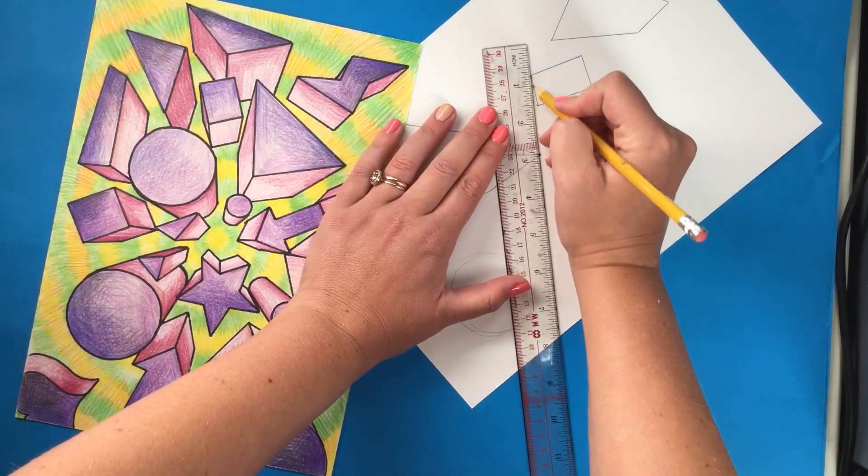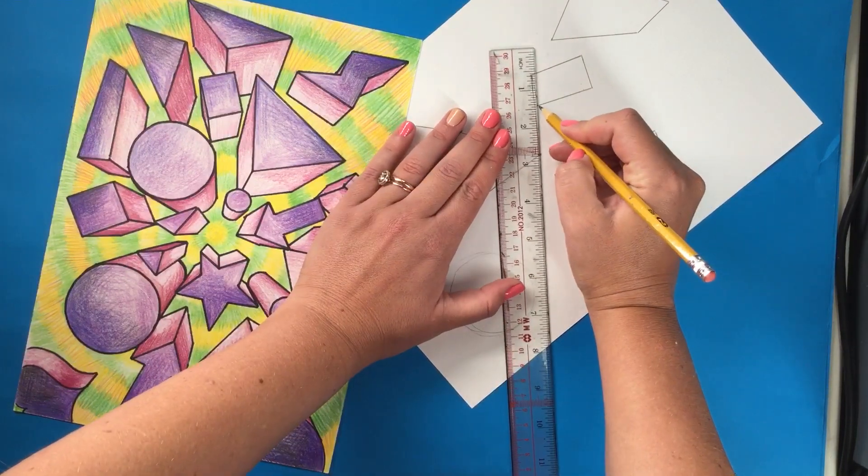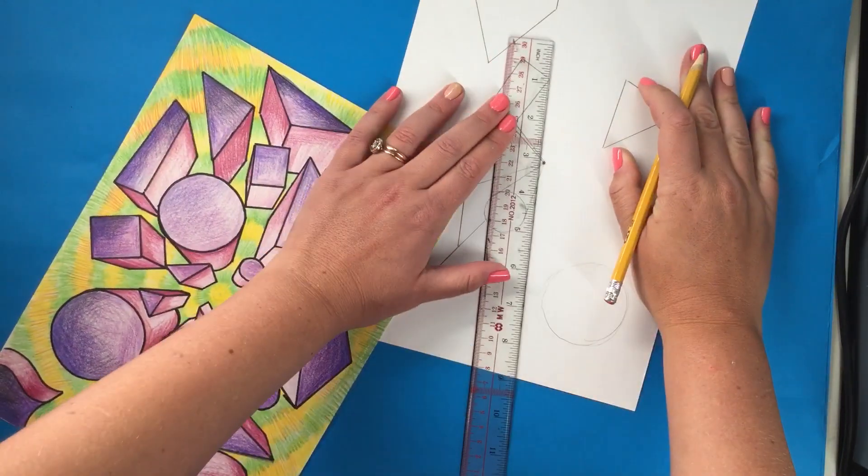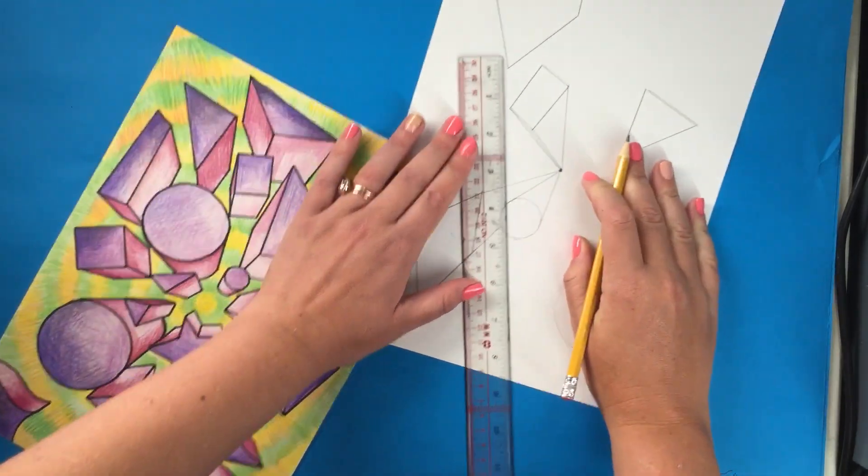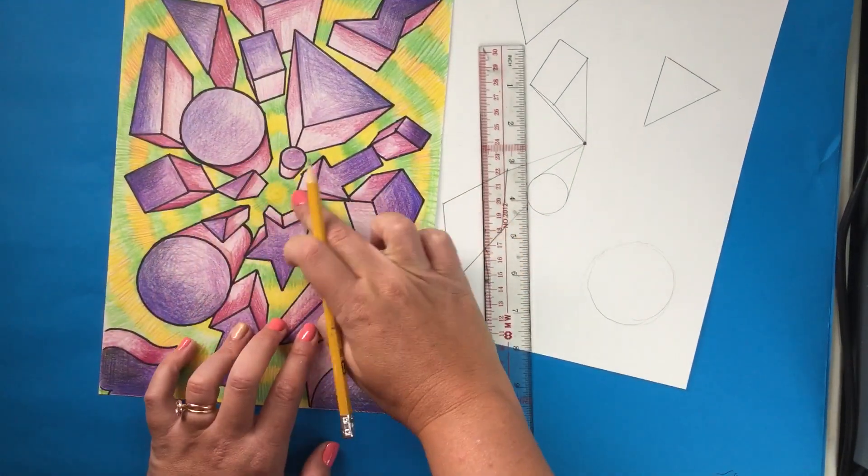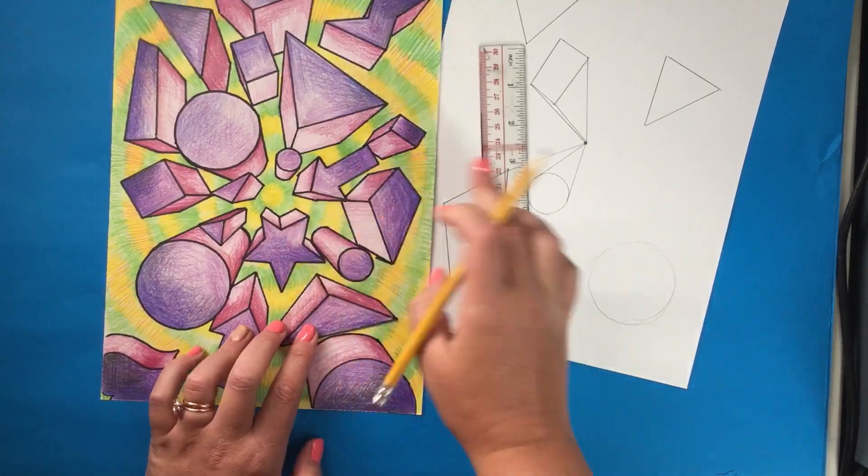This one, this one, this one. I'm going to draw these lines pretty lightly because eventually I'm going to want to erase them because I don't want them going all the way into eternity at the bottom.